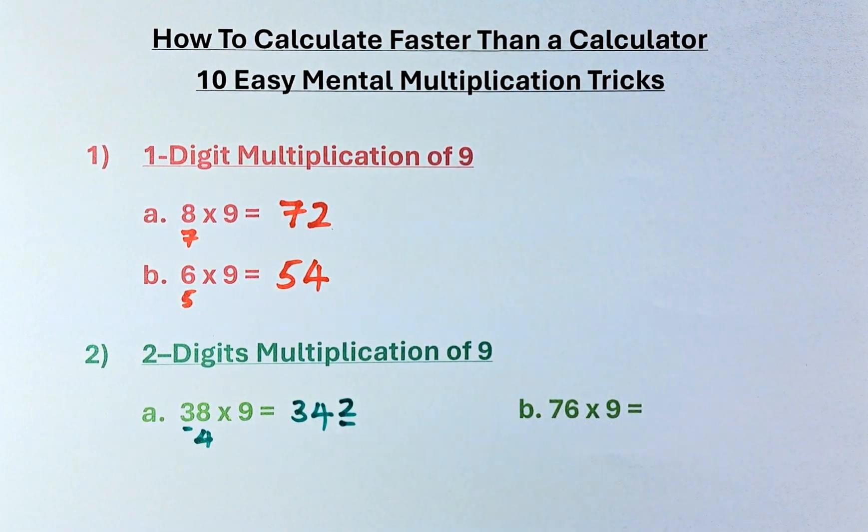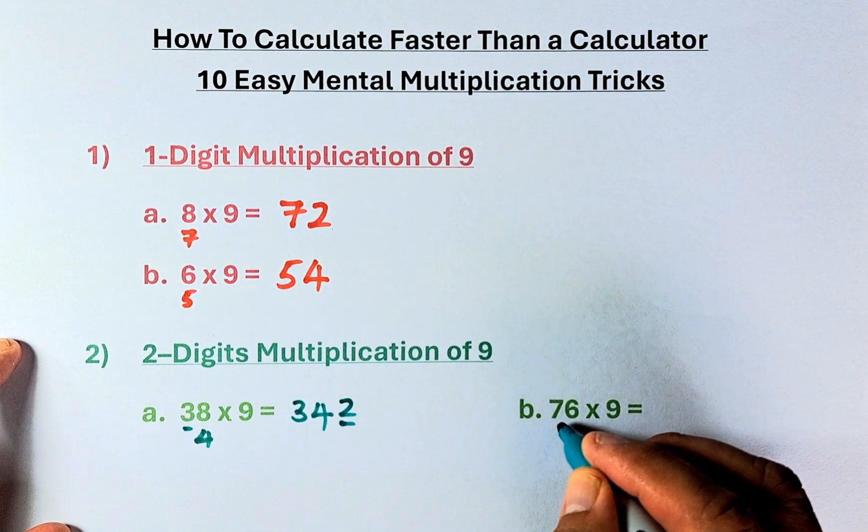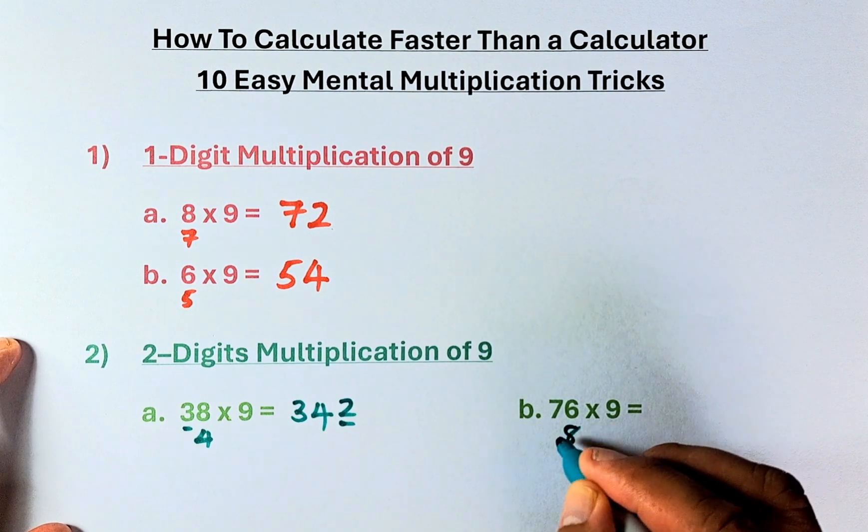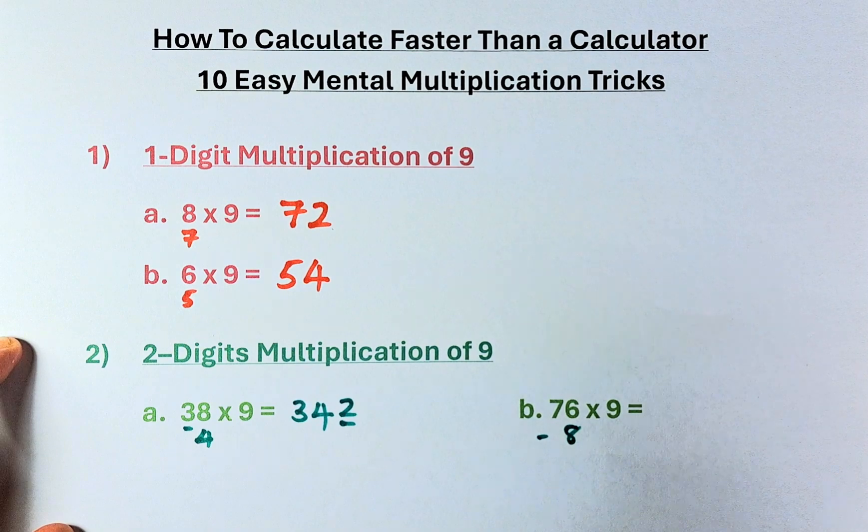So we do something slightly different. 76 times 9, so again you are going to increase by 1, 7 becomes 8. Then you're going to minus that. 76 minus 8 is going to be 68.